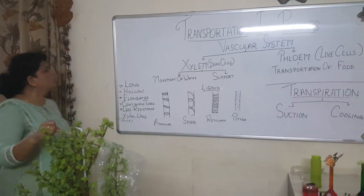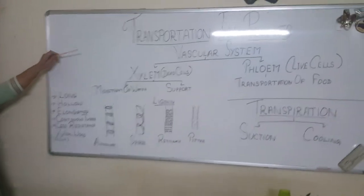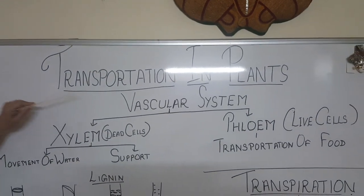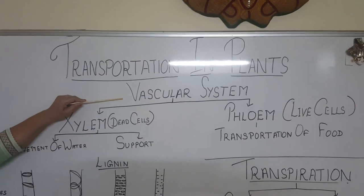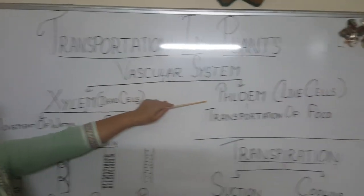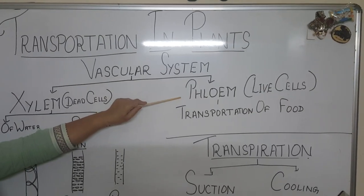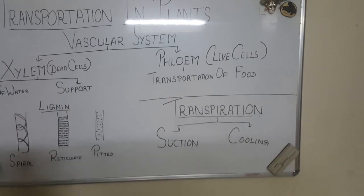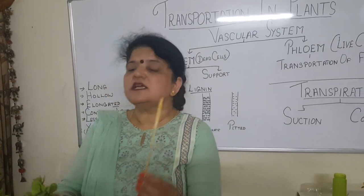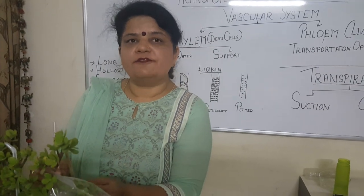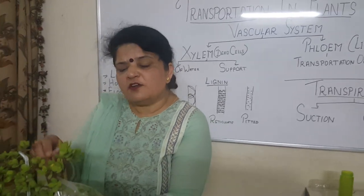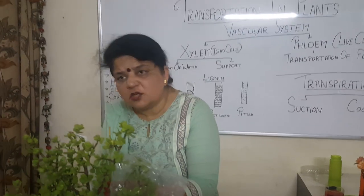Now, let's summarize transportation in plants. This plant has two tubes — one xylem vessel and another phloem vessel. One carries water, another carries food. The food prepared by the leaf must be carried to all parts of the plant. Food will go downward as well, even to the root. Water, however, only travels in the upward direction. The root also needs food.